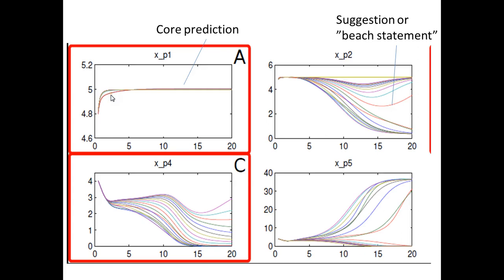We can see it's very different for xp1 and xp2. For xp1, if you pick one simulation, it's sort of representative — the behavior is determined with small uncertainty. But for xp2, an arbitrary prediction is not very representative of what will happen, so this would not be a core prediction — it would be a suggestion. The same is true for the others. But for xp1, we do have a core prediction: a well-determined prediction that qualifies as a core prediction.